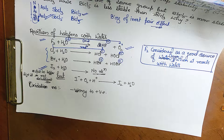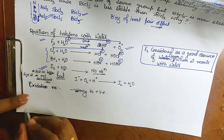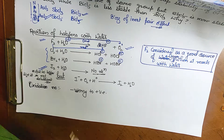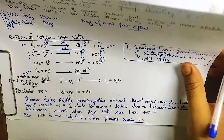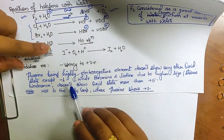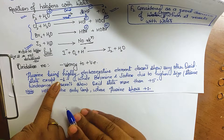Now let's discuss oxidation numbers, valency, and valence electrons for halogens. Fluorine is the only element that shows only two states: zero (free state) and −1. Being the most electronegative element, it does not show any other oxidation state except −1. It has a great tendency to reduce itself.